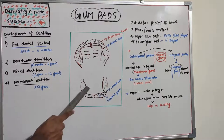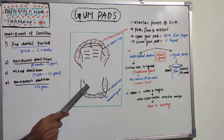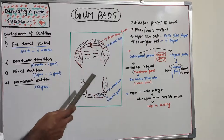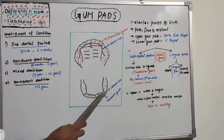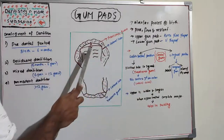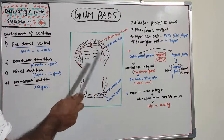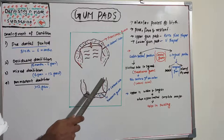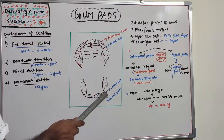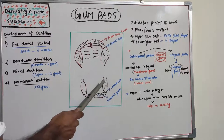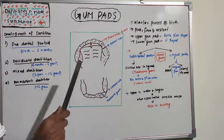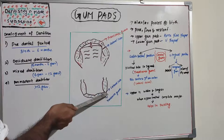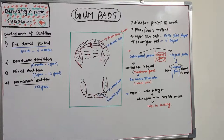The lower gum pad is U-shaped with an anterior portion everted to the labial side. It is also divided into 10 segments, five left and five right. The gingival groove separates the gum from the floor of the mouth, just as it separates the upper arch from the palate. The dental groove runs backwards and joins the gingival groove at the canine region. The lateral sulcus is the transverse groove between the canine and first molar.